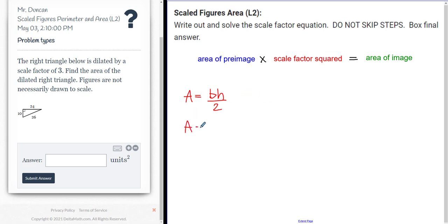So in this case, I would say that my area is equal to 10 multiplied by 24 and then divided by 2. So area of this one is 240 divided by 2, which is 120.